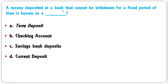Money deposited at a bank that cannot be withdrawn for a fixed period of time is known as — term deposit, checking account, saving bank deposit, or current deposit? If money is deposited for a fixed period of time, that is known as term deposit or time deposit. So A is the correct answer.